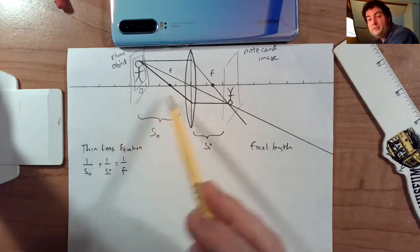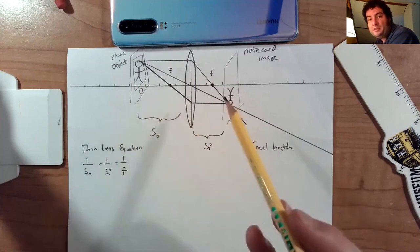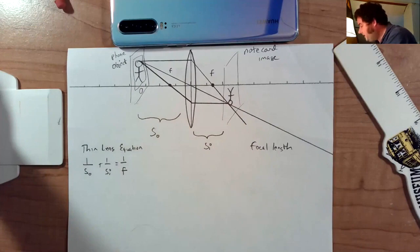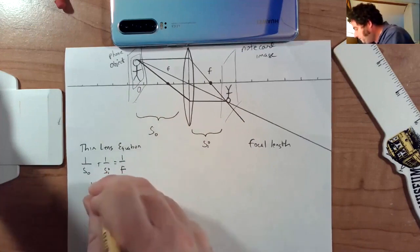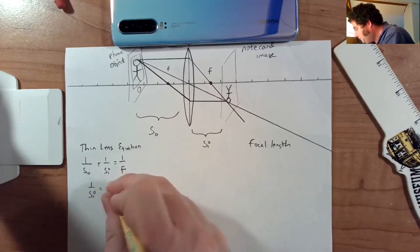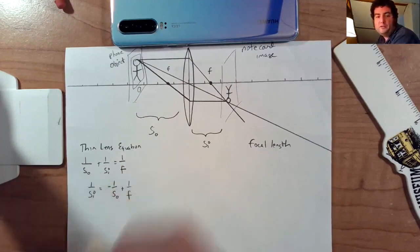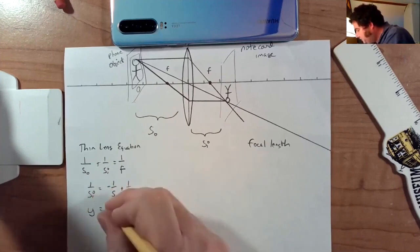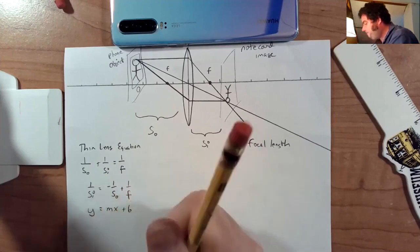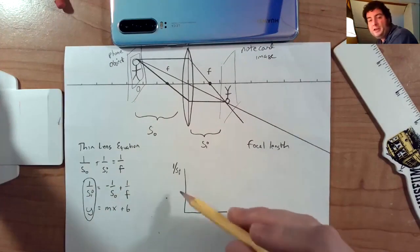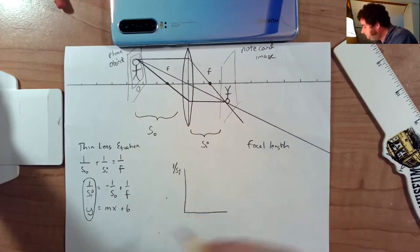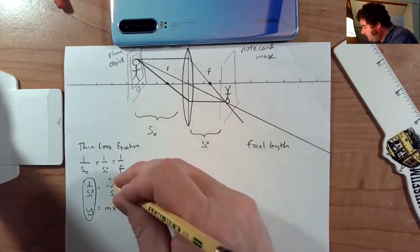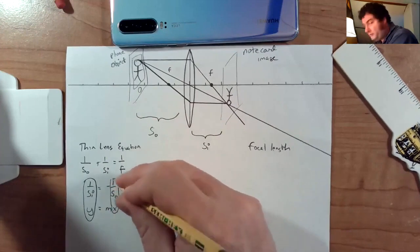We said the object distance where I put the phone is my independent variable. And the dependent variable is the image distance where I put the note card. So I'm going to get the independent variable by itself. So I just subtracted one over SO from both sides. And now I'm going to line that up next to Y equals MX plus B. On the Y axis, apparently we ought to have one over image distance. On the X axis, we're going to have one over object distance.